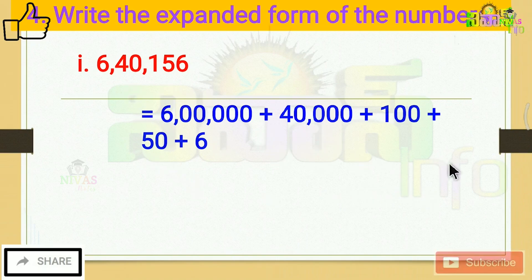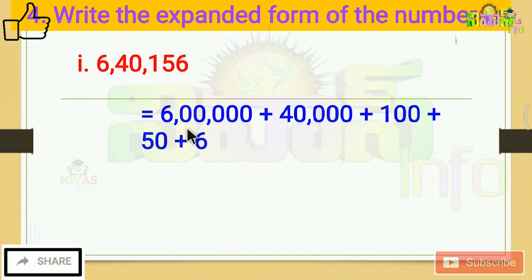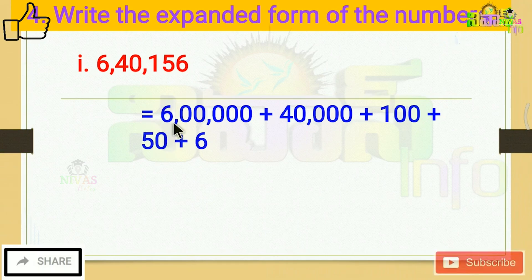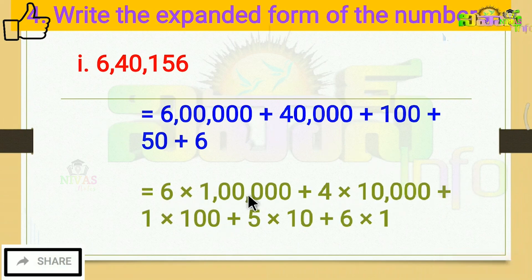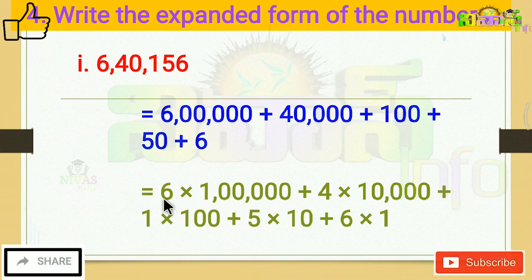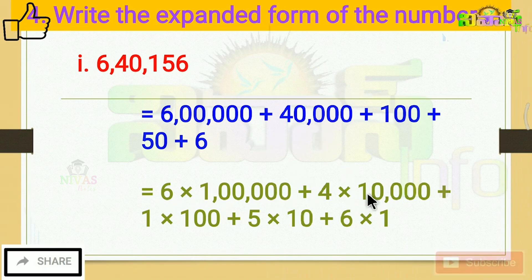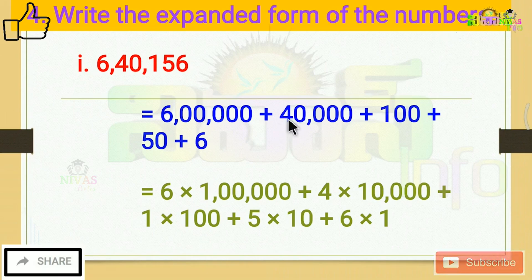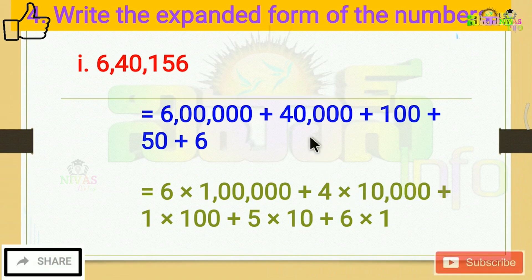In the normal expanded form, there are 6 lakhs, which is 6 into 1 lakh. Then, expanding 40,000: this is the 10,000s place, so 4 into 10,000 gives 40,000.